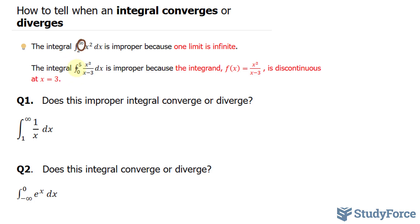So we say that this integral is improper because the integrand, this function, is discontinuous at x is equal to 3. In question one, they ask us, does this improper integral converge or diverge? Those are two other words that we need to know about.